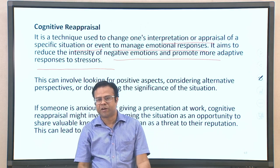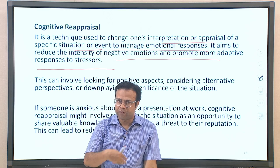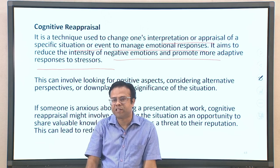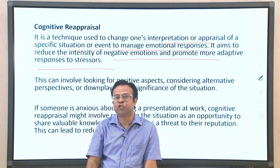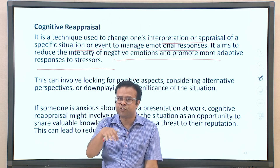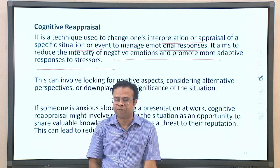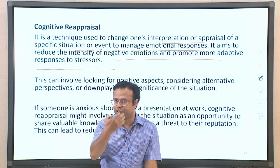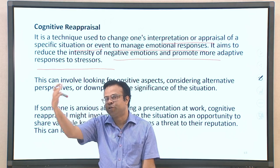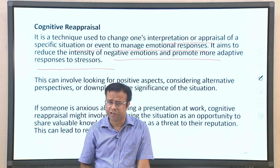For example, if someone is anxious about giving a presentation at work, they can do cognitive reappraisal by reframing the situation — interpreting it as an opportunity to share valuable knowledge and information. By shifting the interpretation from a threat to a possibility of sharing valuable information, it will impact your emotion and reduce the anxiety. That is an example of cognitive reappraisal.